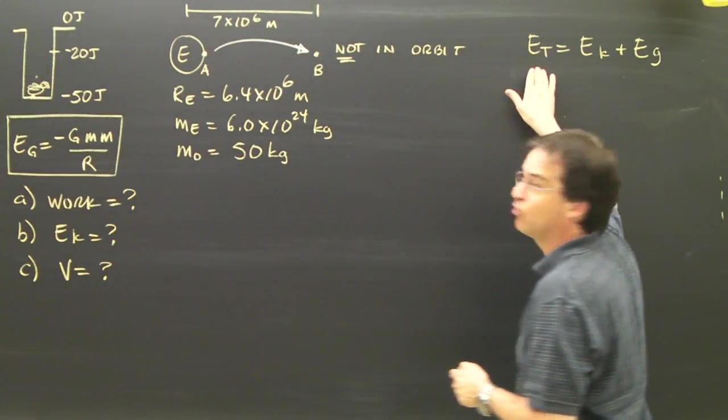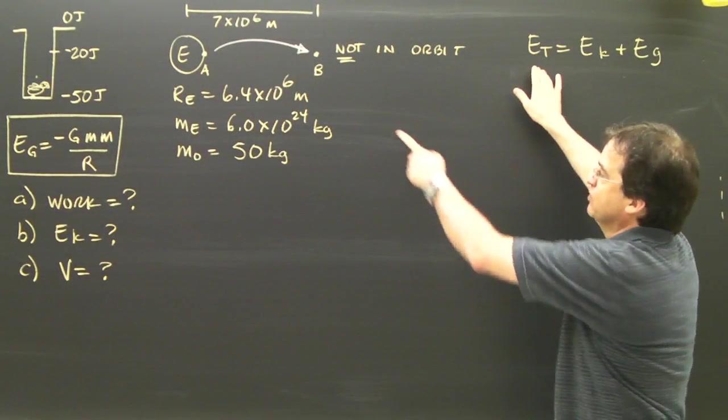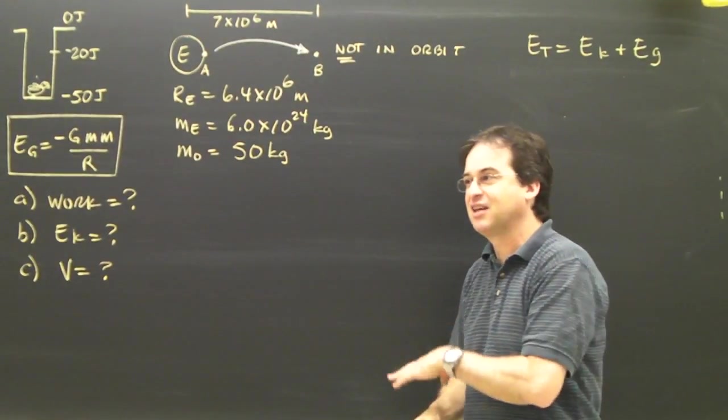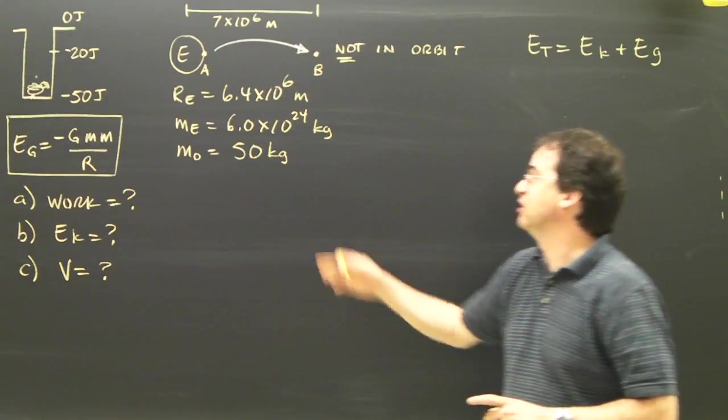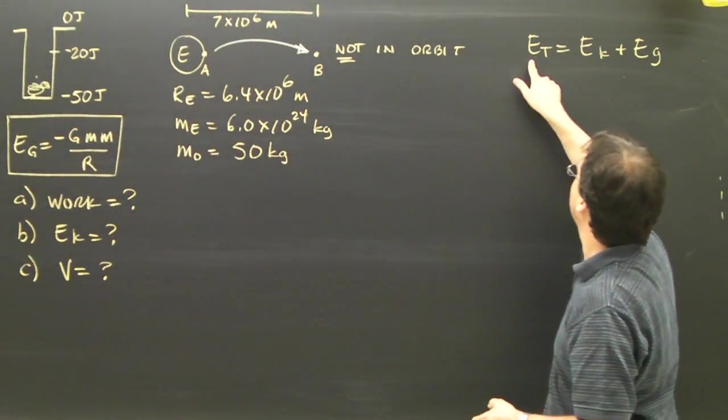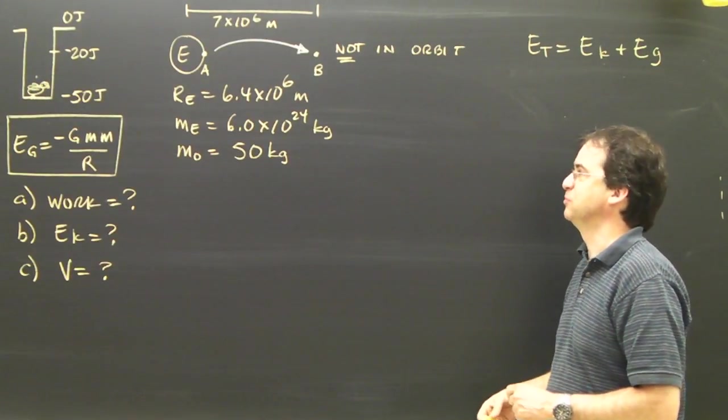I want to point out that the total energy of this object is its kinetic plus gravity. And in this case, because it's not in orbit and when it's on the surface of the Earth it's just sitting there, my total energy will just be the gravitational. So it makes it fairly simple.